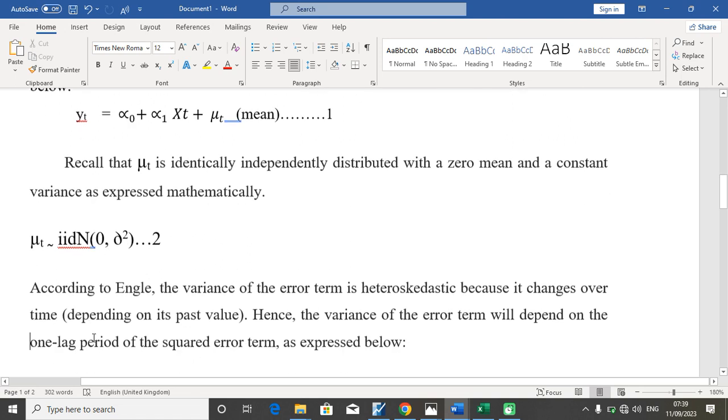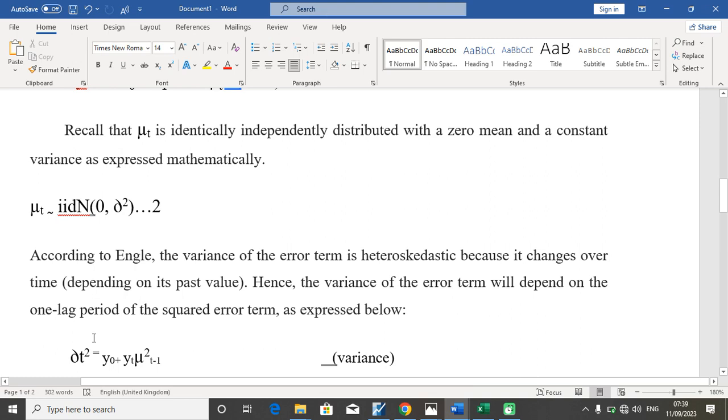And according to Engle, the variance of the error term is heteroscedastic because it changes over time depending on its past or historical values, which means that the variance of the error term will depend on its one lag period, or its previous lag period, or the square of the previous lag period, as expressed below.